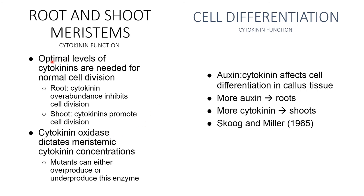Root and shoot meristem: optimum levels of cytokinins are needed for normal cell growth and division. In roots, cytokinin over-abundance inhibits cell division; whereas in shoots, cytokinin promotes cell division. Cytokinin oxidase dictates meristematic cytokinin concentration, and mutants can either over-produce or under-produce this enzyme. Cell differentiation: auxin/cytokinin ratios affect cell differentiation in callus tissue — more auxin leads to rooting, while more cytokinin leads to shoot formation, as observed by Murashige and Miller in 1965.